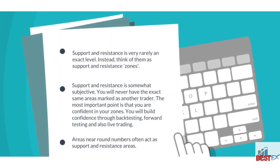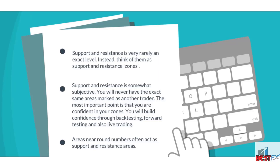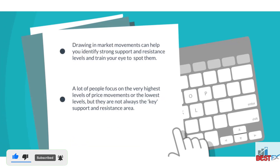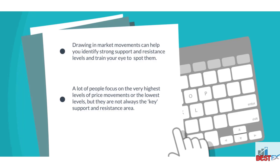Let's look at a few tips to help you pick out the best support and resistance levels. Support and resistance is very rarely an exact level — instead, think of them as support and resistance zones. Support and resistance is somewhat subjective; you will never have the exact same areas marked as another trader. The most important thing is that you are confident in your zones. Areas near round numbers often act as support and resistance areas. Drawing market movements can help you identify strong levels and train the eye to spot them.